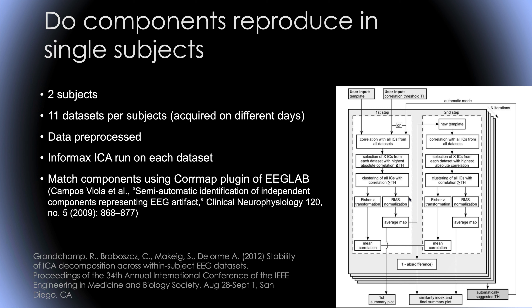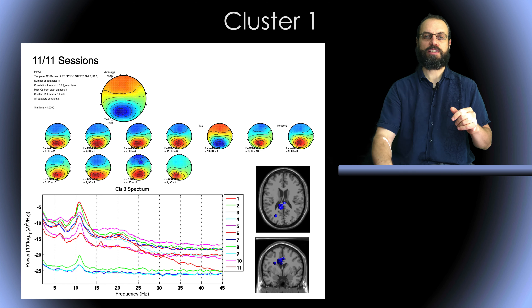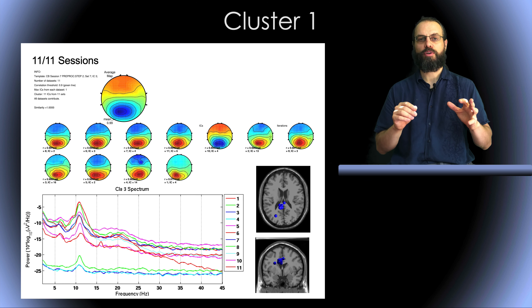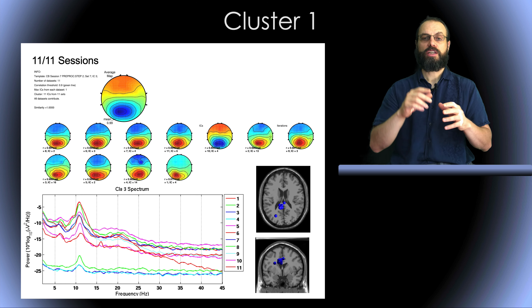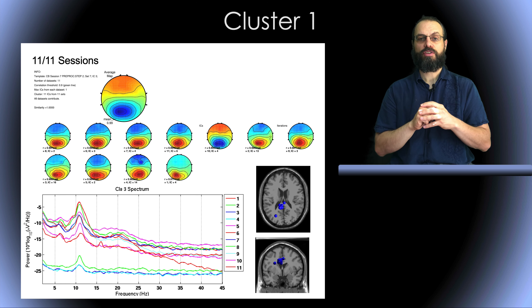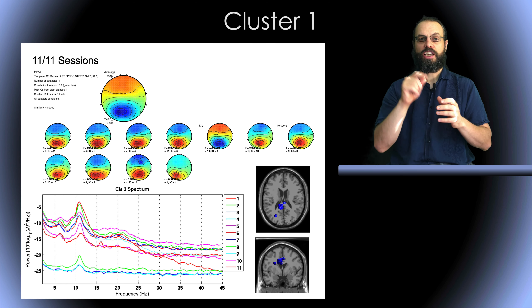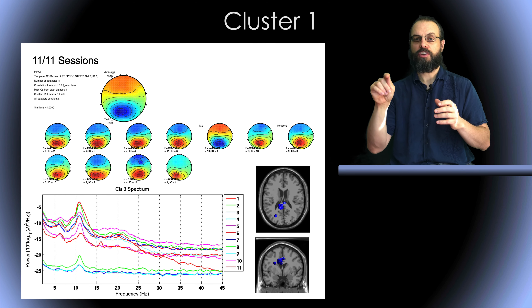The picture shown here is how this plugin works. It looks complex in the picture, but it's actually just looking at correlation of scalp topographies. Here is an example of components we got on one of the subjects. We have 11 sessions, so here we have the component for all 11 sessions. The top scalp topography is the average, and then we have the scalp topography for each of the sessions.